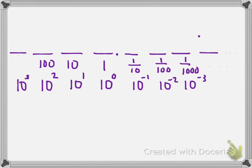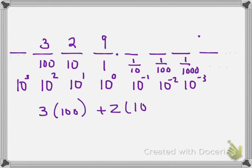So for example, if I had the number 329, that means I have 3 times 100, plus 2 times 10, plus 9. And now it's broken up by its denomination.